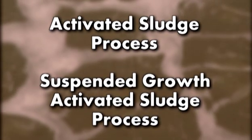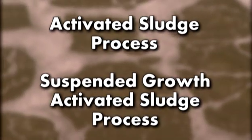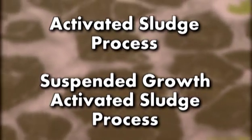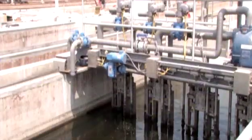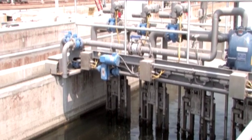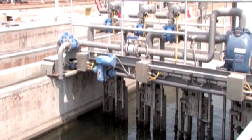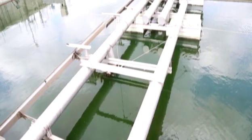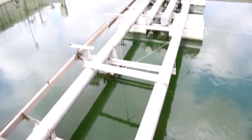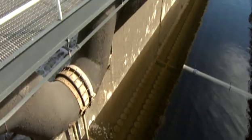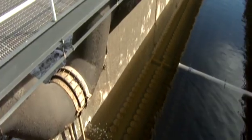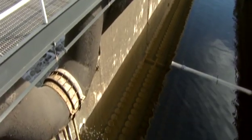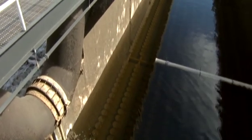The Activated Sludge, or Mixed Liquor Suspended Solids, flows from the aerated basin to a sedimentation basin or clarifier to allow the suspended solids to settle, creating a sludge blanket. A portion of this sludge blanket is piped to the solids processing area for further treatment and is called Waste Activated Sludge.